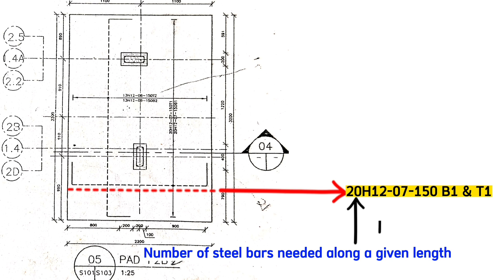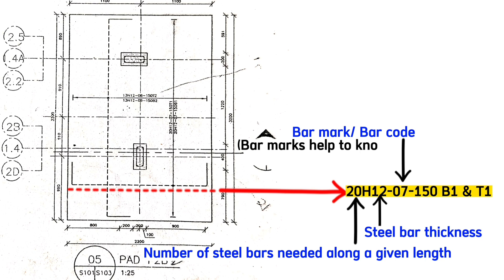This H12 shows us the thickness of the steel bars along that given length. This figure or is in the middle here says 7, means the code which helps us to understand where specific steel bars start and end from.